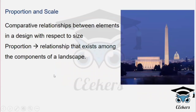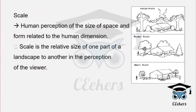Proportions and scale refer to what we see and how sizes relate. Proportion is the relationship that exists among components of a landscape. If you compare the proportions of each element, you can compare them across a large scale, normal scale, or small scale.